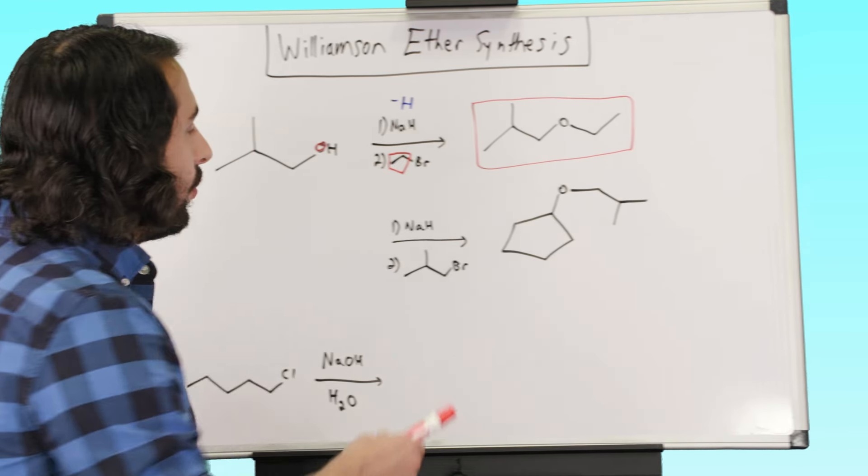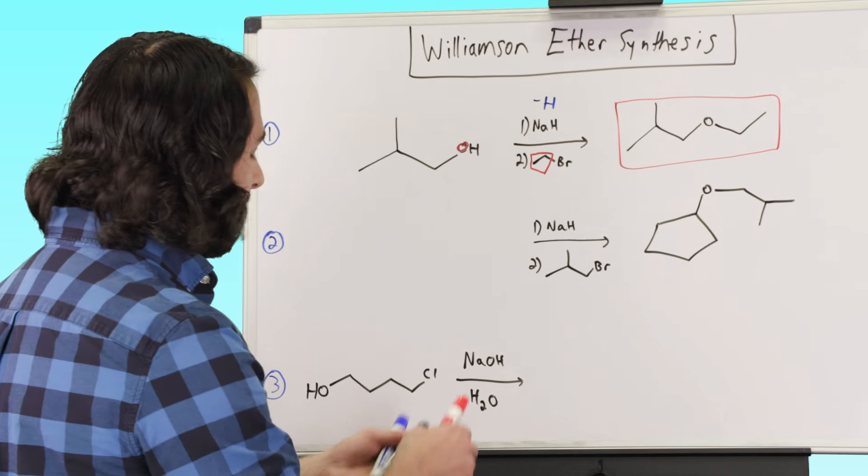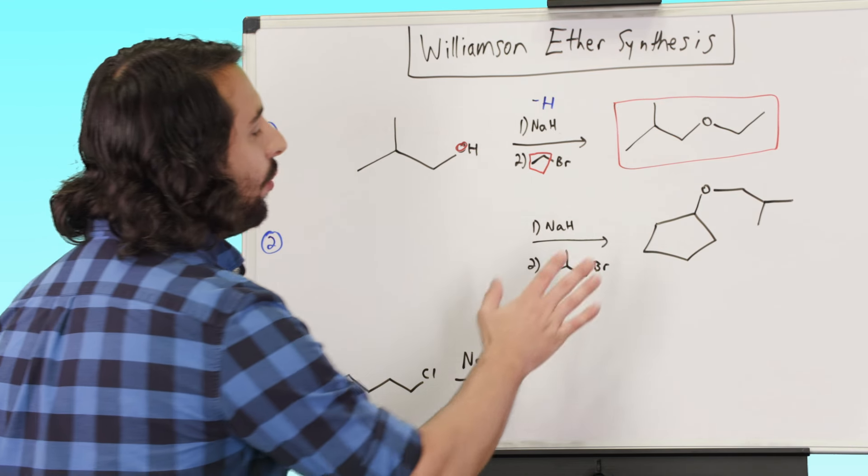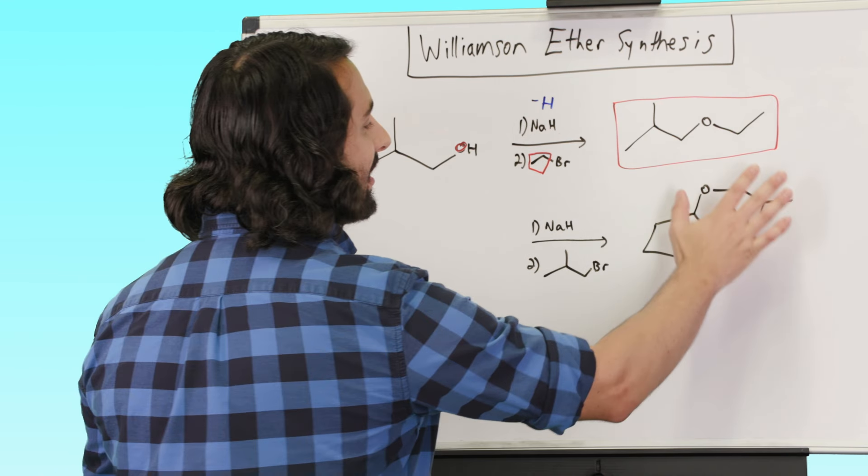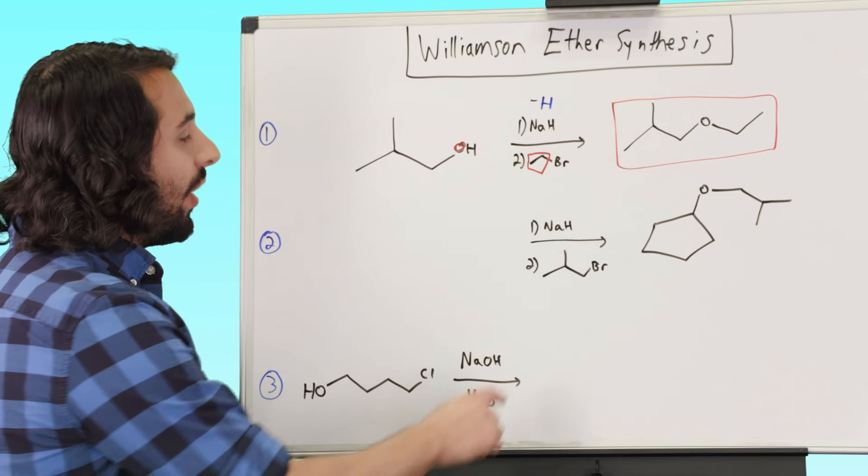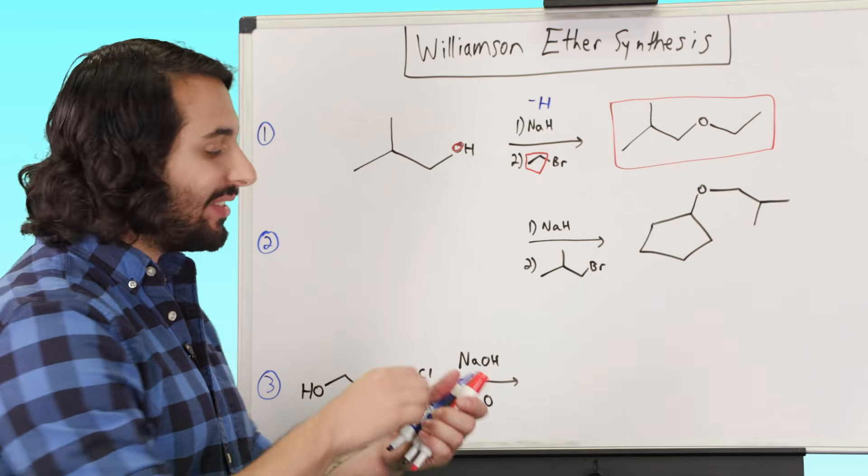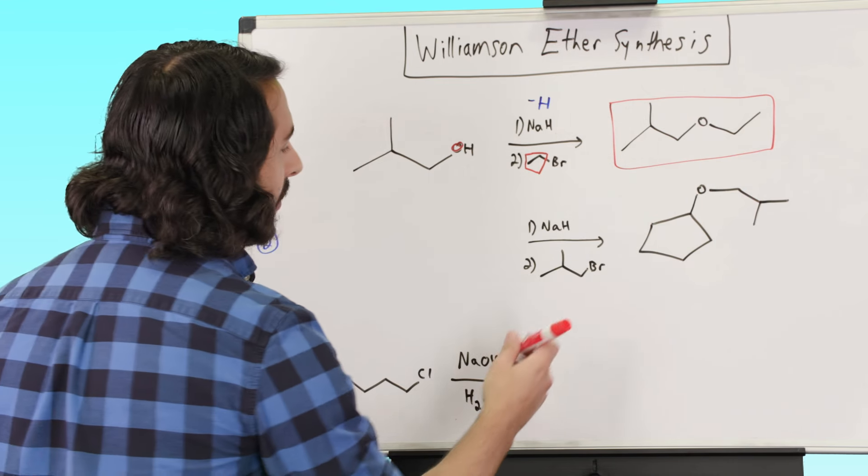Now looking at this one, what if we need to go backwards? This is really not any more difficult. We're just going the other direction. We're saying that we did some Williamson ether synthesis to produce this ether. So what did we start from? Well, what is the alkyl halide that was involved in the SN2 step?